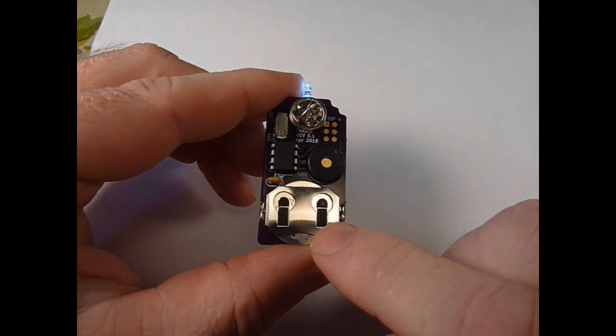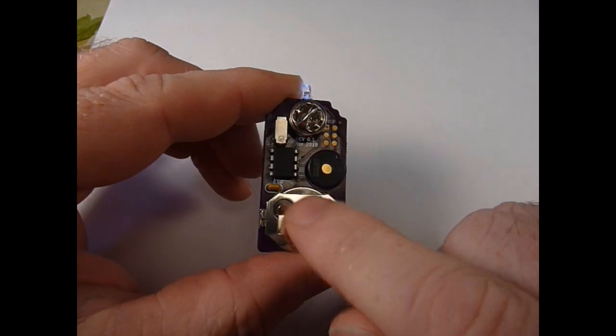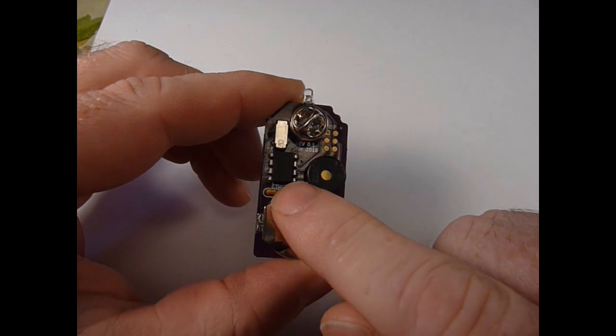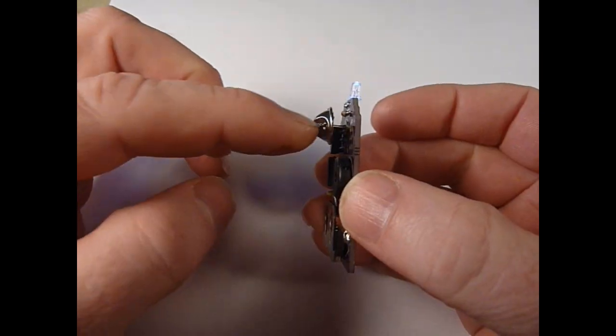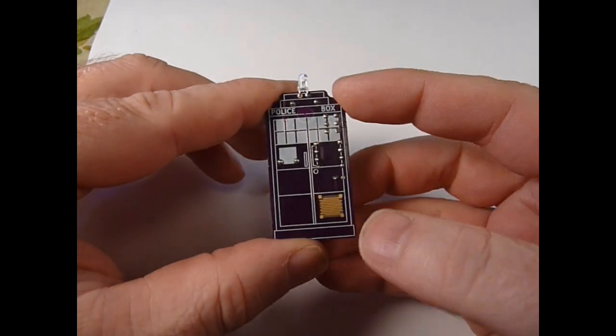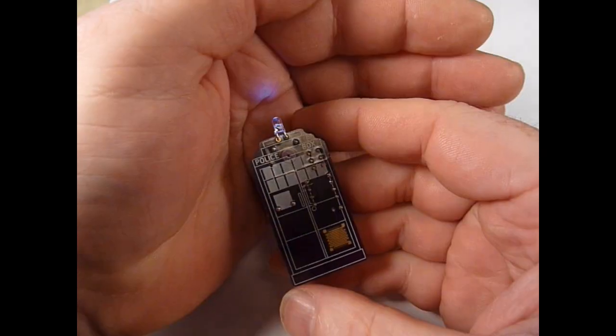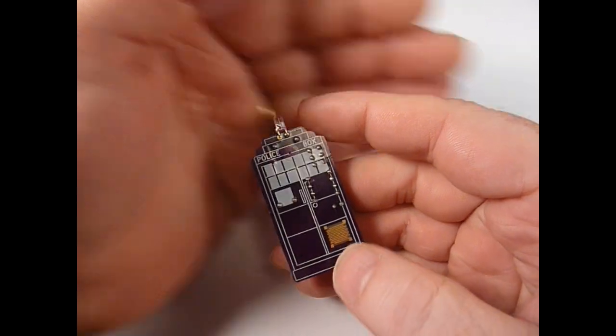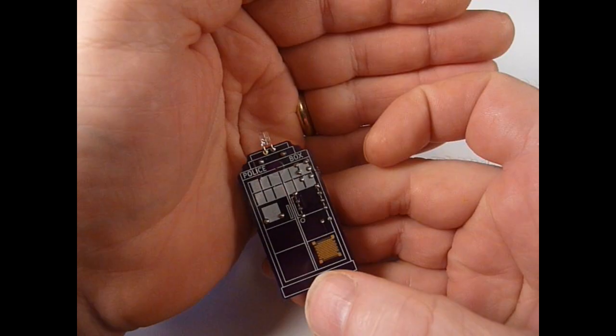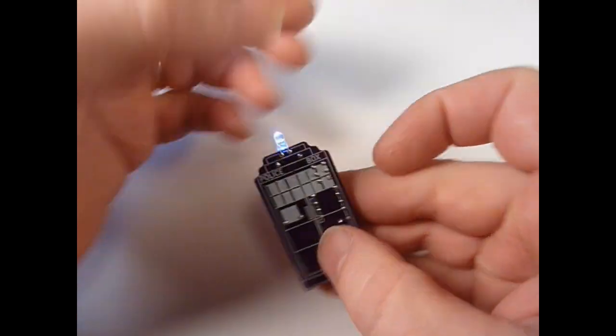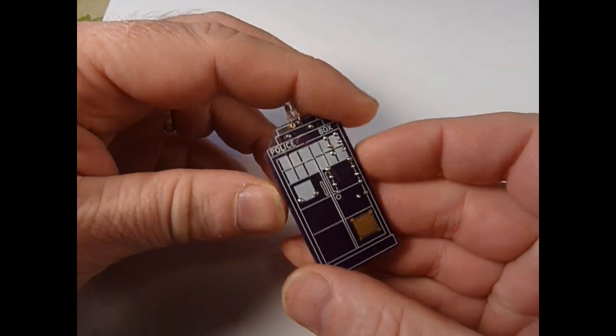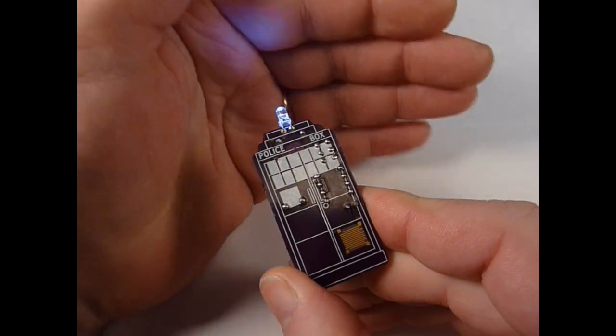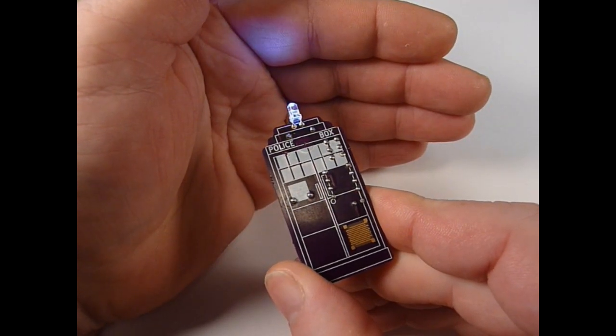So it consists of a CR2032 battery, ATtiny85, switch, speaker, and TITAC clutch. And then it's got two modes. One mode where it will fade in and out continuously, you can turn it on or off. And then if you hold the button down while you turn it on, it will switch modes and you'll get my best impression of an 8-bit TARDIS.